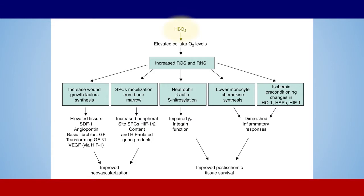Lastly, I just want to show you this graphic from a study on hyperbaric mechanisms. At the top you can see hyperbaric oxygen — HbO2. Hyperbaric oxygen creates an elevated amount of extracellular oxygen, and that increases your reactive oxygen species and your reactive nitrogen species. What does that mean? It means it increases your free radicals.